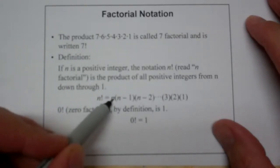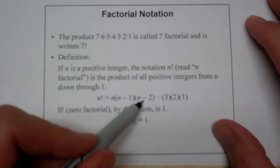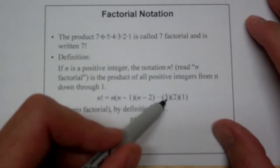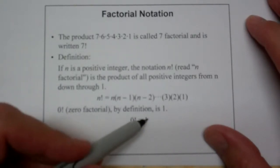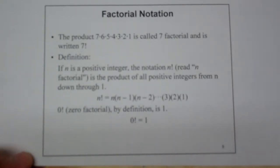So if this is 16, you're going to multiply 16 times 15 times 14 times 13 times blah, blah, blah, three, two, one. And then just by definition the zero factorial is one.